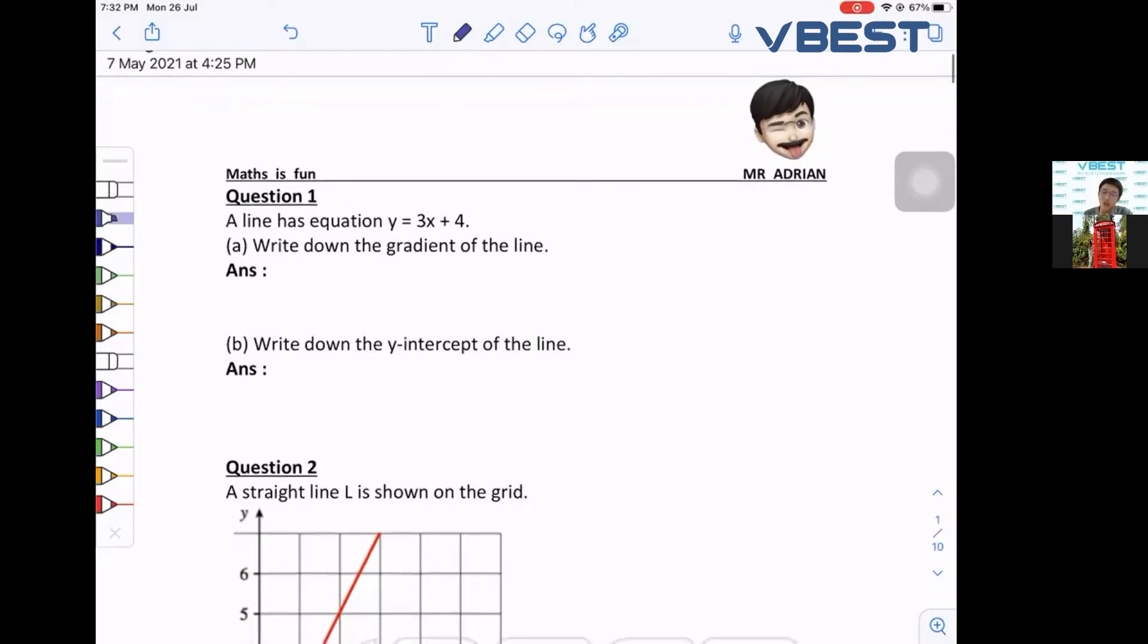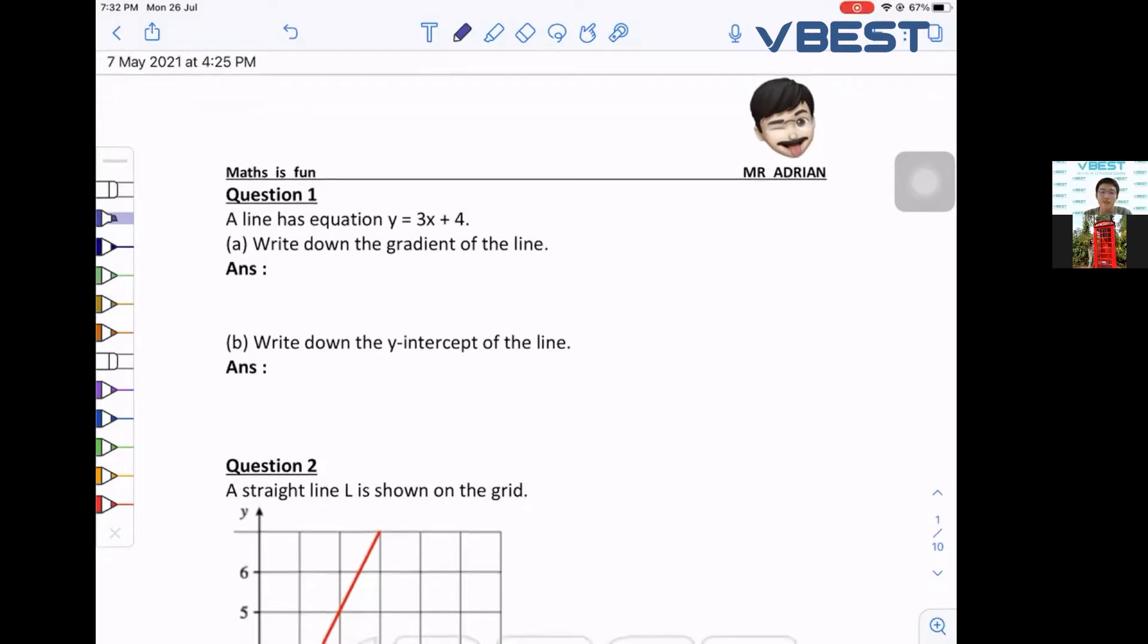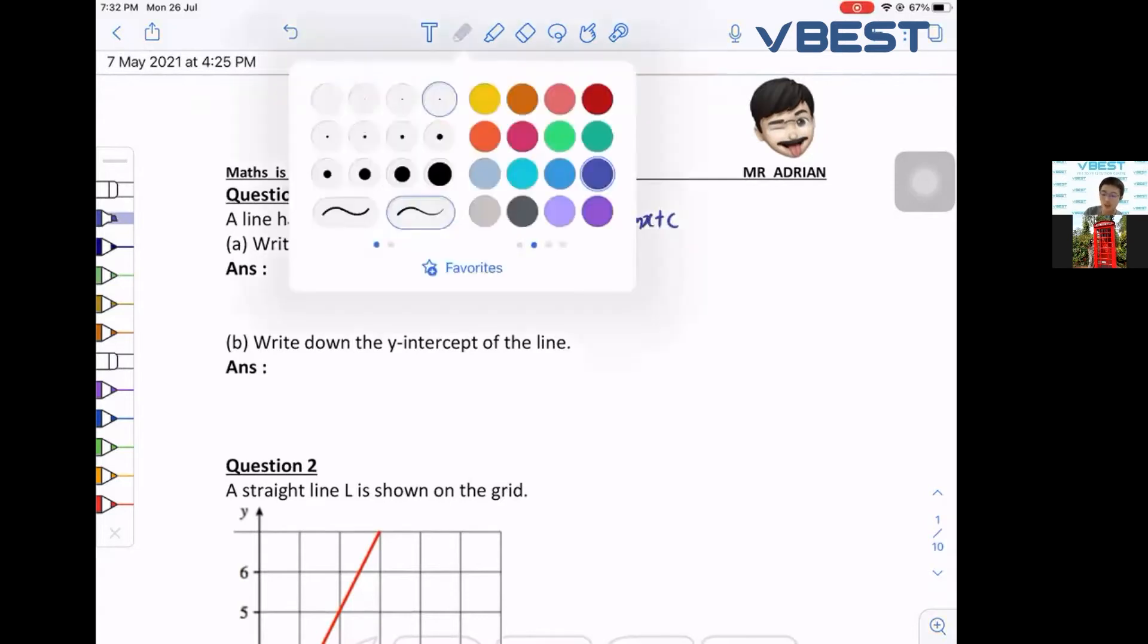In this chapter, the first thing that you need to know is the formula. What is the formula for the straight line is y equals to mx plus c. If you guys want, you can write here. This is the formula, this is the equation for the straight line.